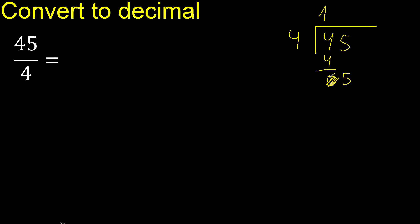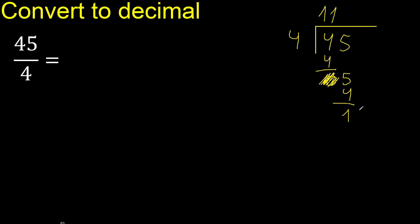Bring down the 5. 4 multiplied by 1 is 4. 5 minus 4 is 1. There is no more number, so complete with 0 — add a decimal point. Now we have 10.